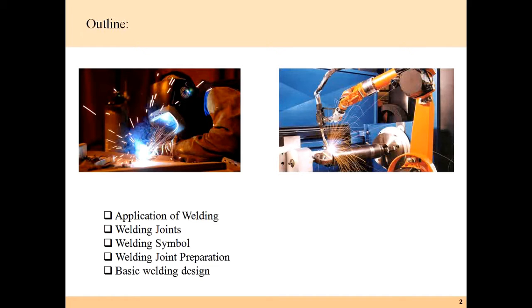The outline of today's lecture is to study the different applications of welding, the different types of welding joints required for joining different elements, and the symbolic representation used for welding. We will also cover how to join two elements, where preparation is based on the thickness of the element, the basic stresses present in welding, and how to find the dimensions of the weld based on load conditions.